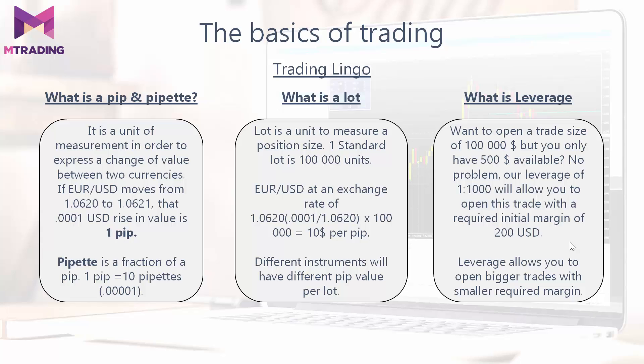So let's start with pip and pipette. A pip is a unit of measurement used to express a change in value between two currencies. If EURUSD moves from 1.0620 to 1.0621, that is a 1 pip rise in value. A pipette is a fraction of a pip — 1 pip equals 10 pipettes.